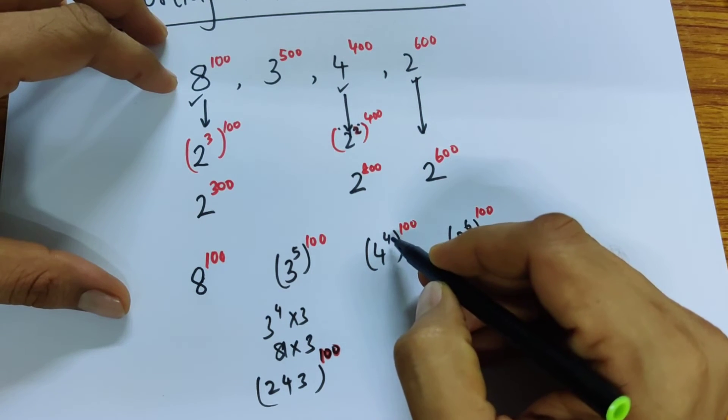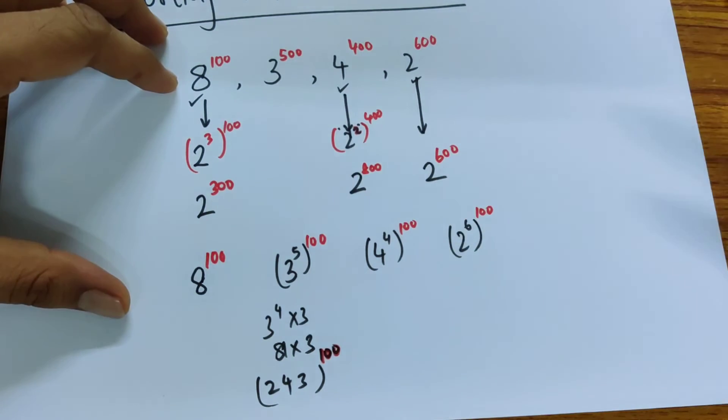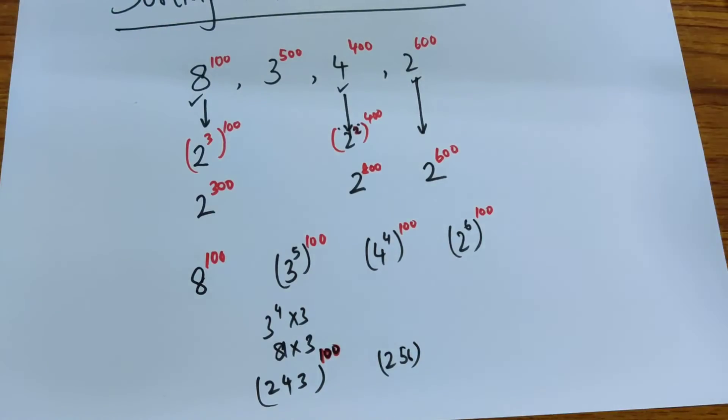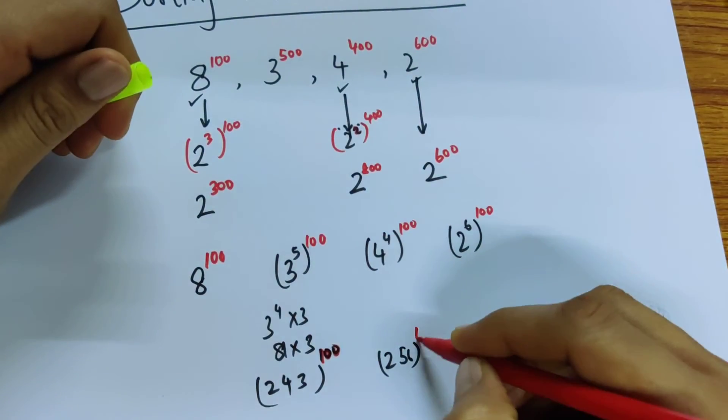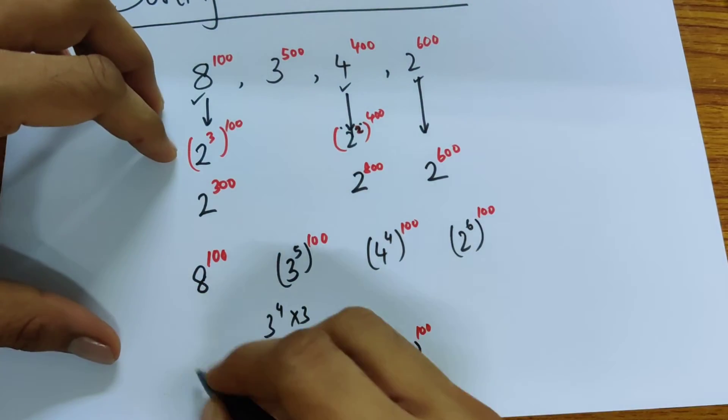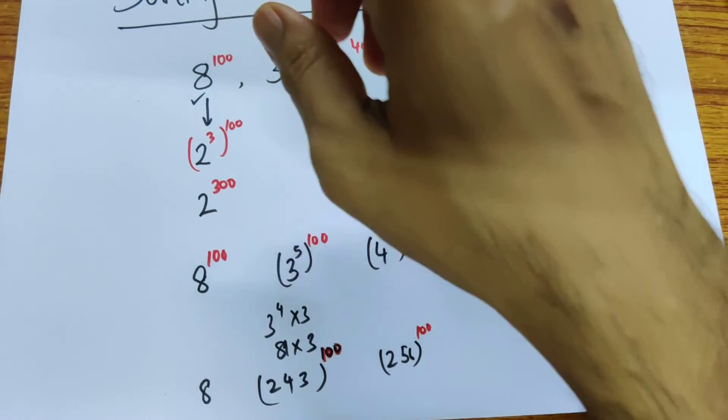Now 4 to the power of 4. 4 squared is 16, 16 squared is 256. So that's 256 to the power of 100. This was 8 to the power of 100, nothing to be done here.